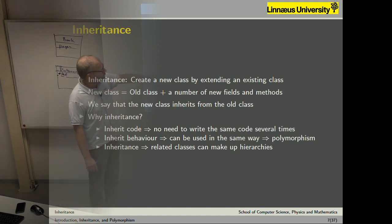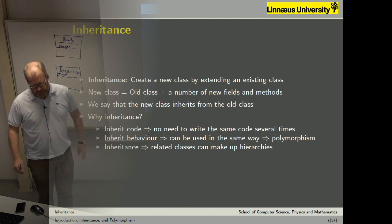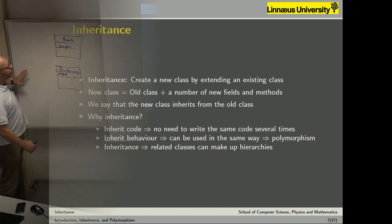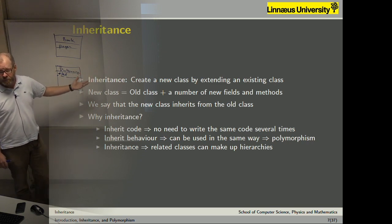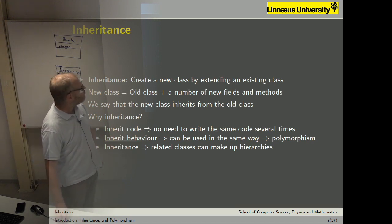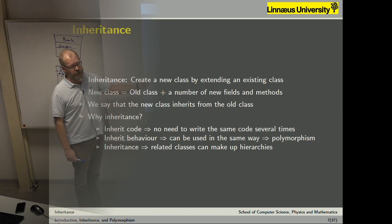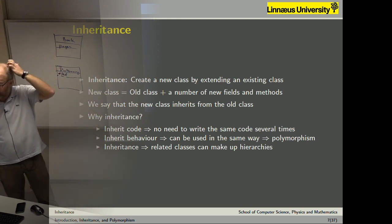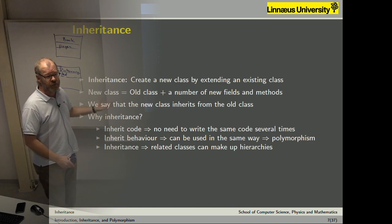More importantly, inherited behavior can be used in the same way. If we have a number of classes connected through inheritance, we can treat them uniformly. We can treat whatever different types of books we have as a Book — we can have a collection of different books, the first one being a dictionary, the second something else, but treat them all as a Book. By introducing inheritance we are creating hierarchies, and this is a good way of organizing things.